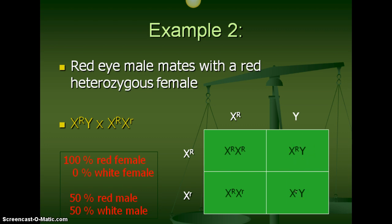The female passed on that white-eyed trait to her sons. The father just passed on the Y chromosome, so the father is not passing on the white-eyed trait to his son, just passing on the trait of being male — the Y.